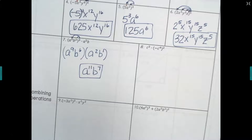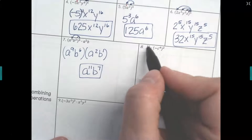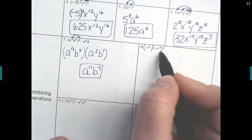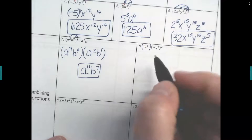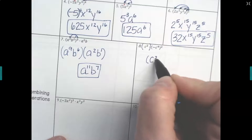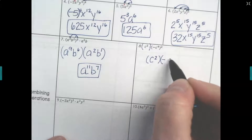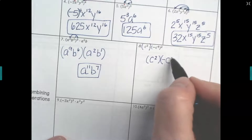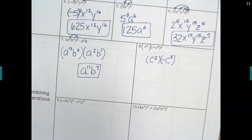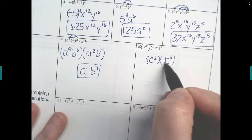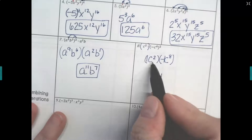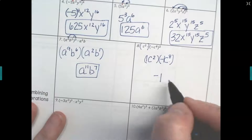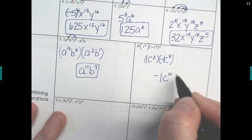Let's try it again. The c squared is going to get multiplied, but we want to simplify the power-to-a-power first. So we keep the c squared and it gets multiplied to negative c, and four times two is eight. So now we have one times negative one out front, giving negative one. c to the two times c to the eight is c to the tenth.